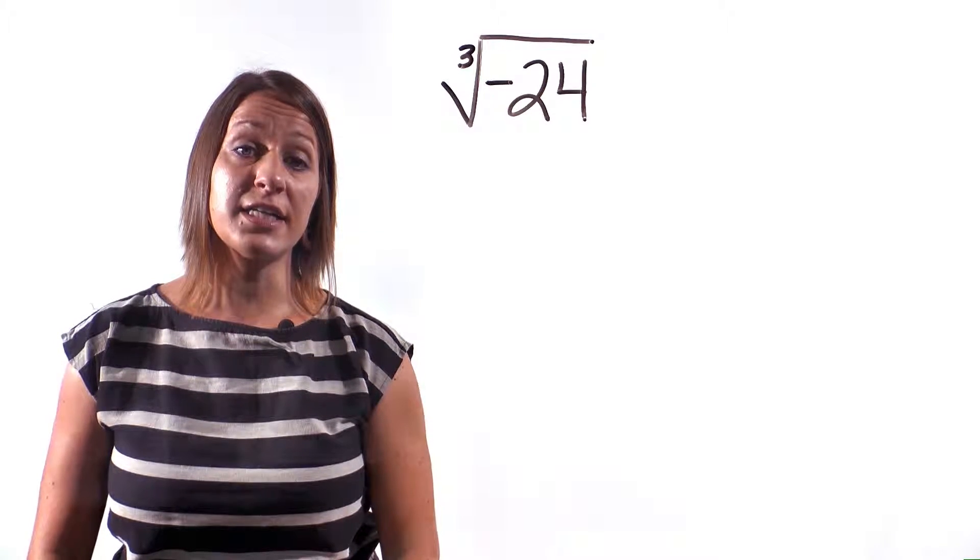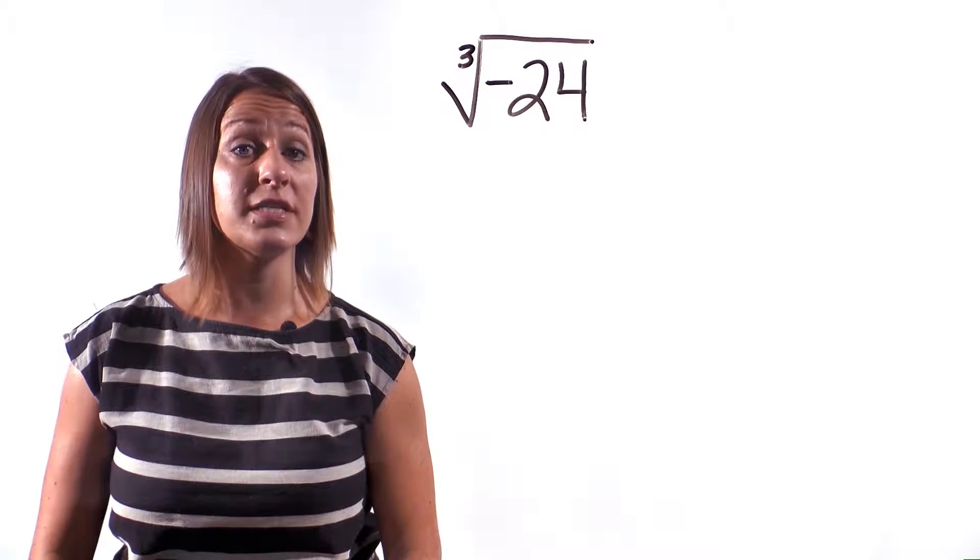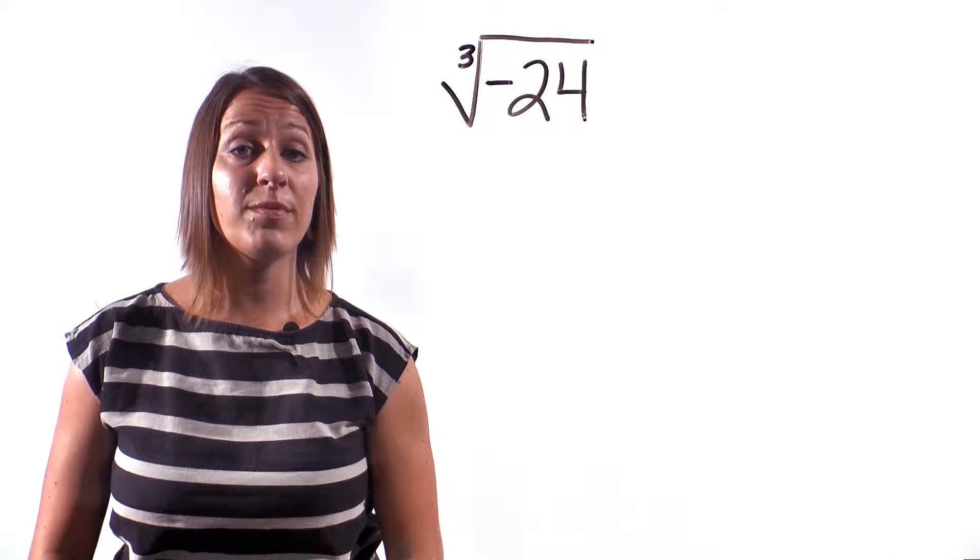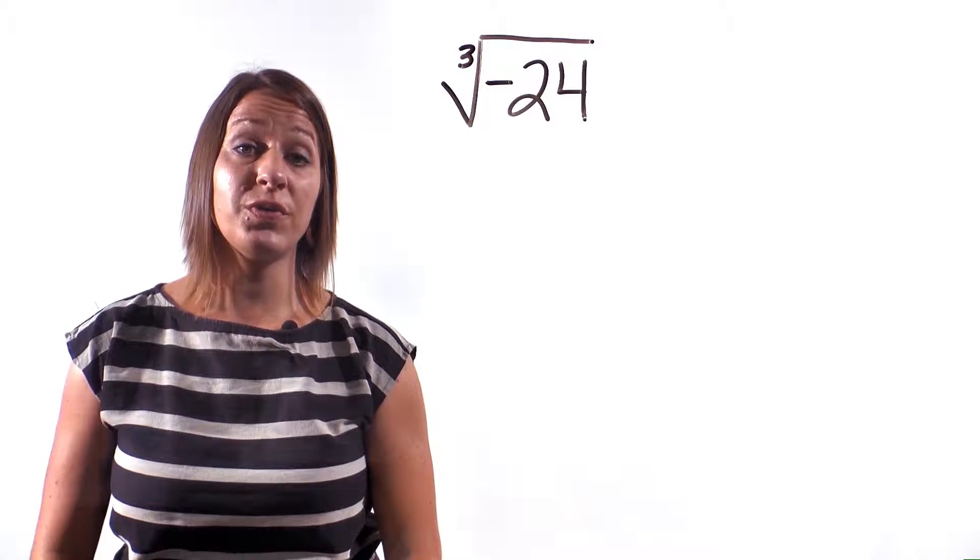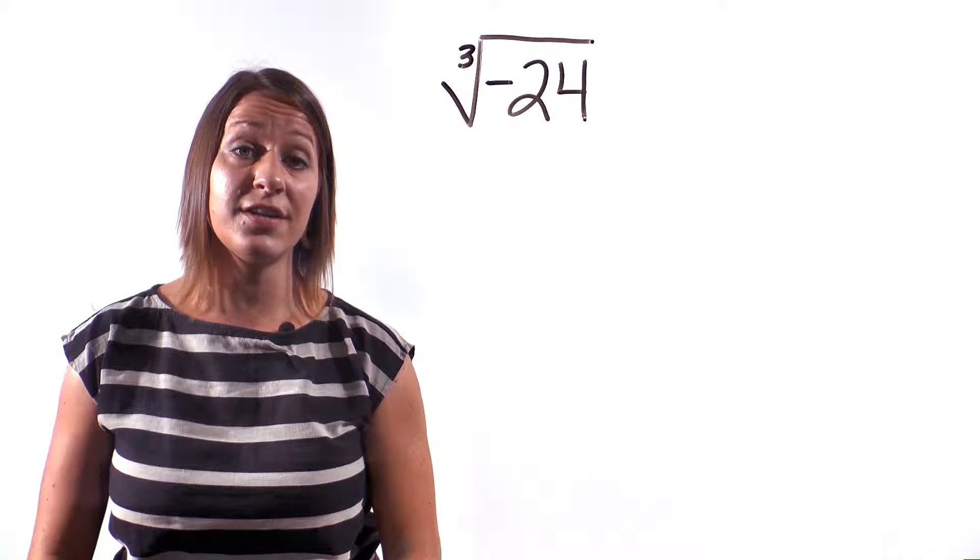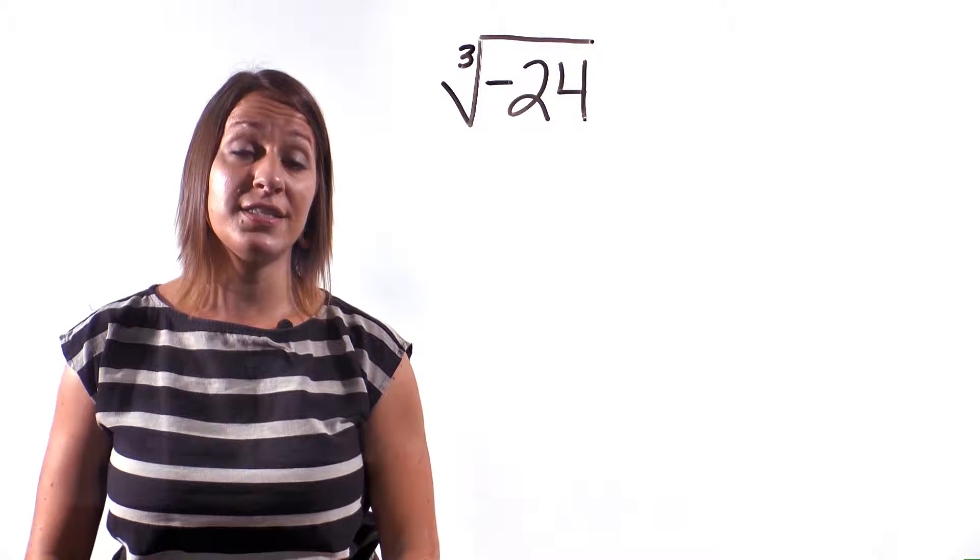However, if the exponent on the outside of the radical is even, that problem would be undefined. So, since we have a 3 as our exponent on the outside of the radical, let's go ahead and solve this problem.